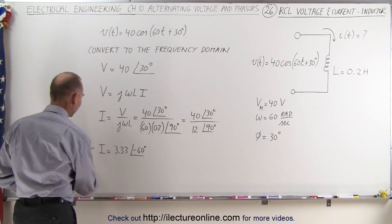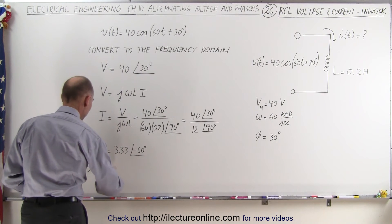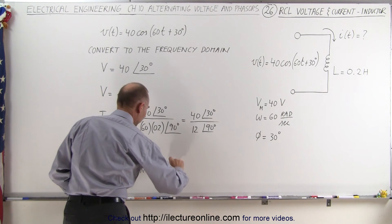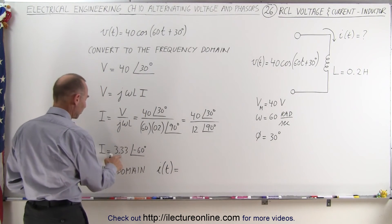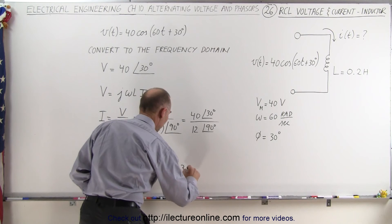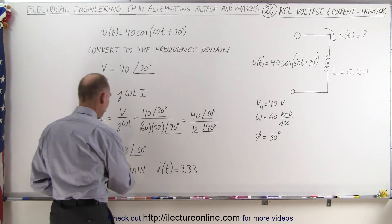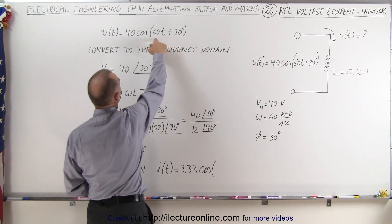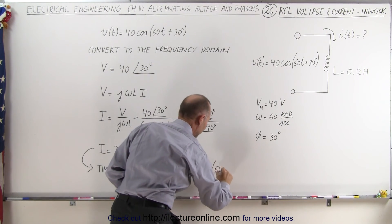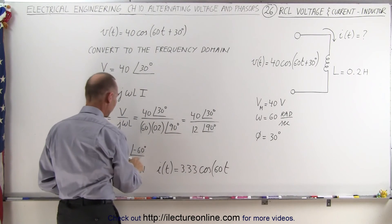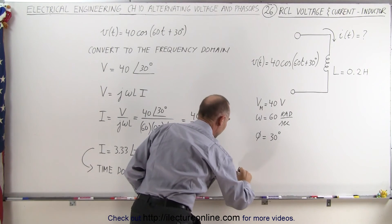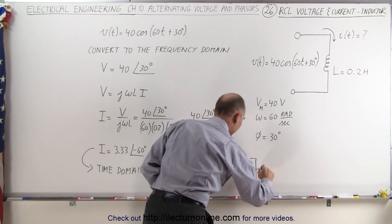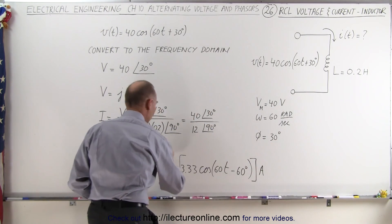And now we convert this back into the time domain, and so we can say that the current, as a function of time, is equal to the maximum current, which is 3.33 times the cosine of omega t. Now we have the same omega t as we have for the voltage, that would be 60 times t, and the phase angle will be minus 60 degrees. And of course that would be in terms of amps, and there would be the result.